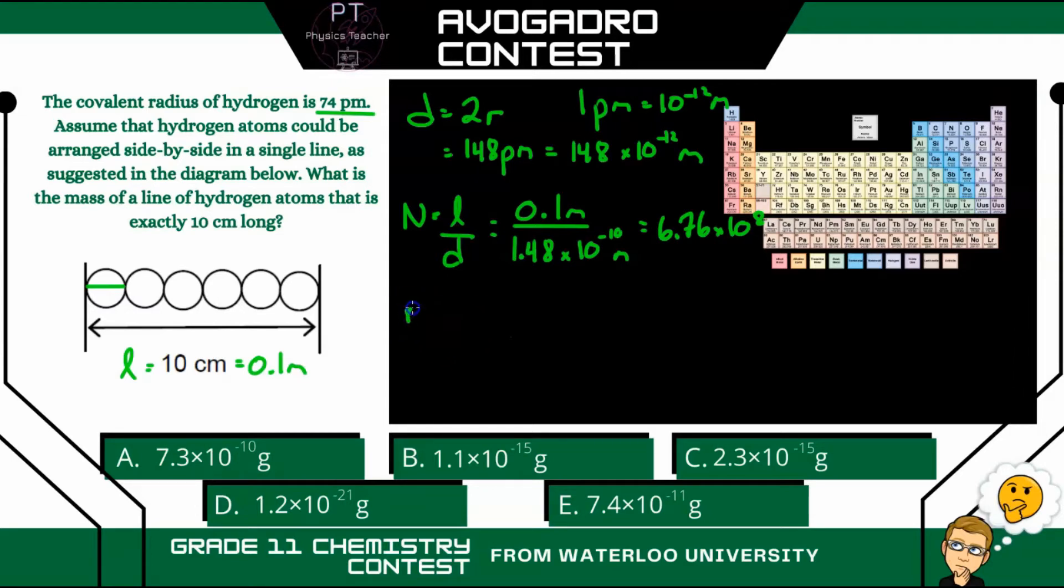So the number of moles N is going to be equal to the number of those hydrogen atoms divided by Avogadro's number.